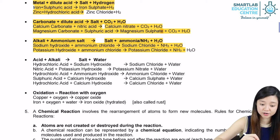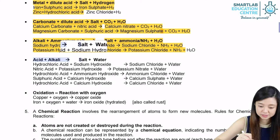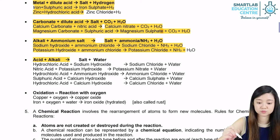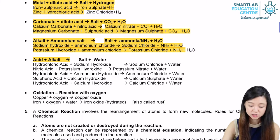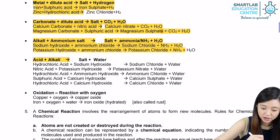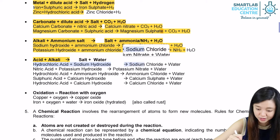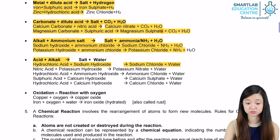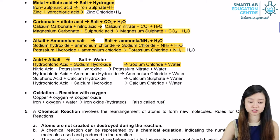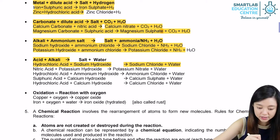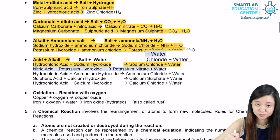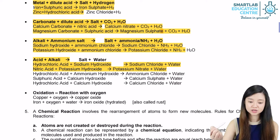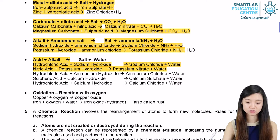Another equation to memorize is: acid plus alkaline gives salt plus water. This is called a neutralization reaction. An example is hydrochloric acid plus sodium hydroxide, which gives sodium chloride plus water. Another example: nitric acid plus potassium hydroxide gives potassium nitrate plus water. Potassium nitrate is the salt being formed.